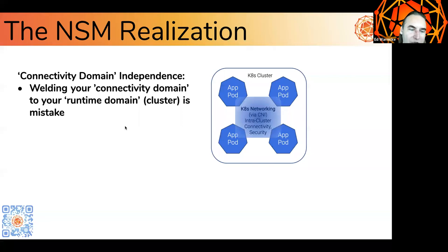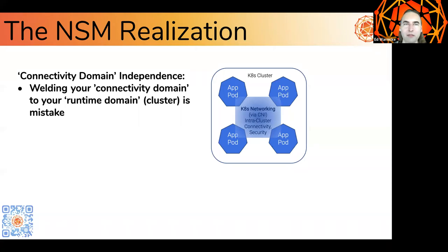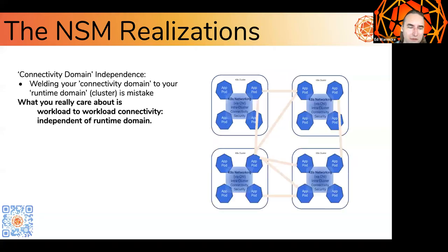This gets us to the central realization of Network Service Mesh. A lot of people have been looking at this problem — it's been very painful for a long time. The central realization came down to: why are we welding our connectivity domain to our runtime domain? Why is it that every workload in a particular cluster only gets access to networking that makes sense within the context of that cluster? Where a thing runs and the kinds of things it needs to talk to are not necessarily intrinsically related.